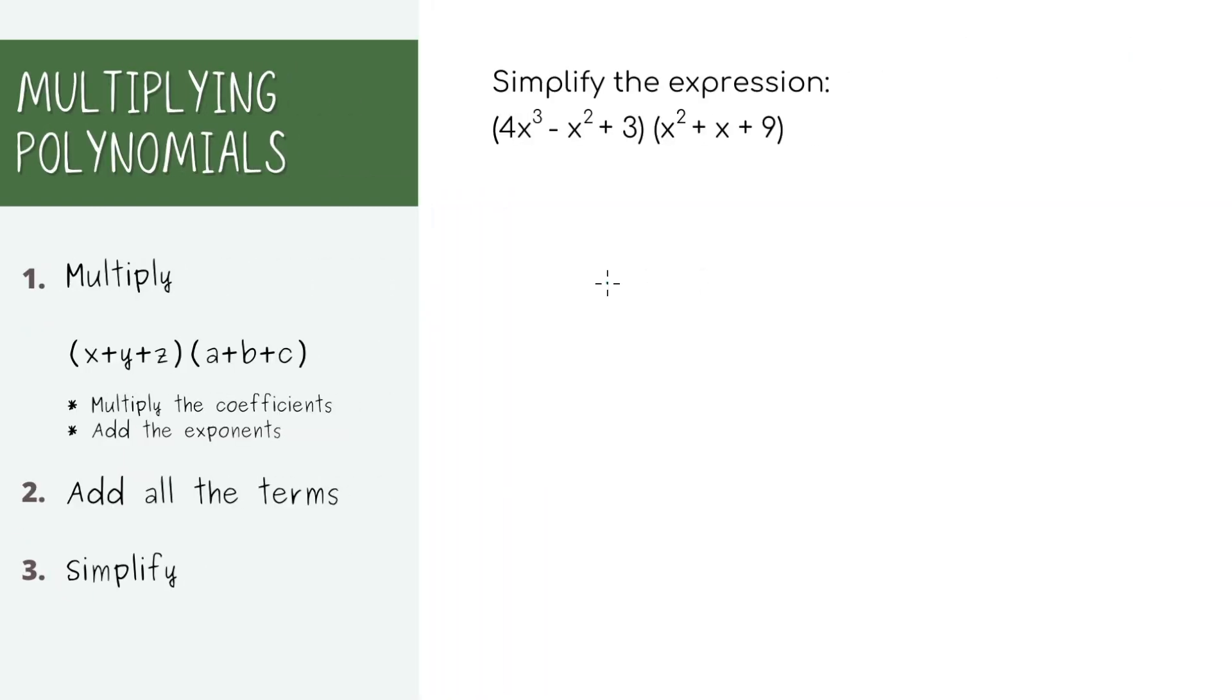Finally, the problem we've all been waiting for, multiplying trinomials. They're kind of tedious, but just be super methodical about it so you don't miss any terms. We're again going through the same process. Take the first term and multiply it to every term in the second set of parentheses. Next, take the second term and multiply it to everything in the second set of parentheses. Finally, now take the third term and multiply it to everything again.